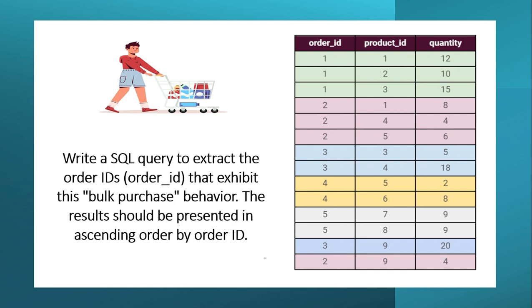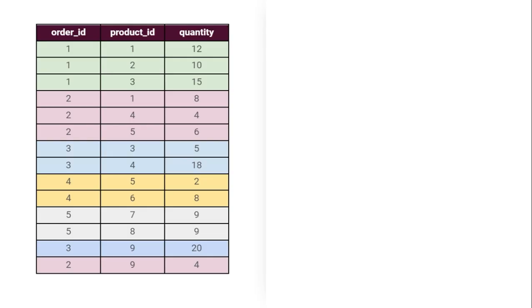The question is: how will you identify bulk purchase behavior? You first have to identify the key metrics to define bulk purchase orders. You can pause here and think through what key metric you would define. Looking at the quantity column, it is straightforward that if the quantity of an order is greater than the average quantity of orders, that order is a bulk order. However, there are multiple order IDs and for each order ID the average quantity will be different, so which average will you consider?